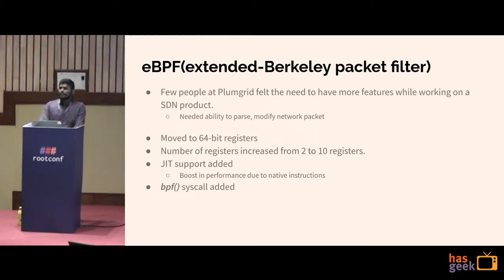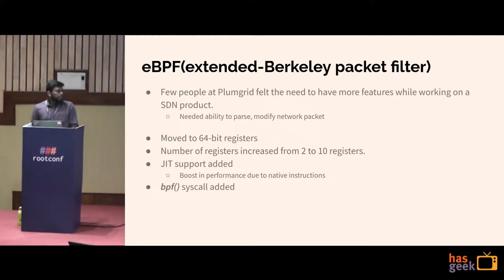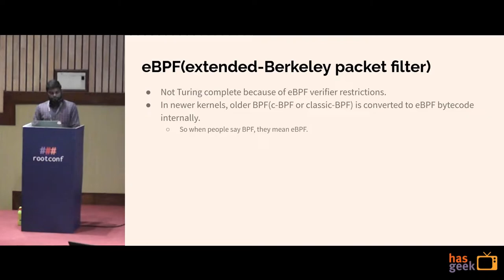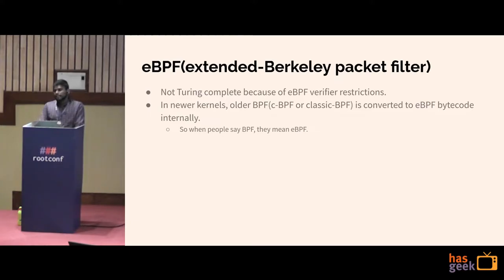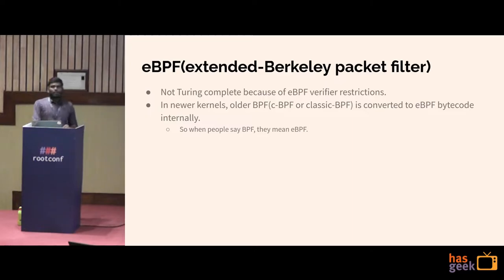JIT support was added so that eBPF code running inside the kernel gets directly converted to the native architecture — x86, ppc64, whatever. A BPF syscall was added, giving you a way to interact with a loaded program. When people say eBPF or BPF today, they basically mean eBPF. In newer kernels, the original BPF is converted to eBPF; if referring to the original, you must explicitly say classic BPF or cBPF.